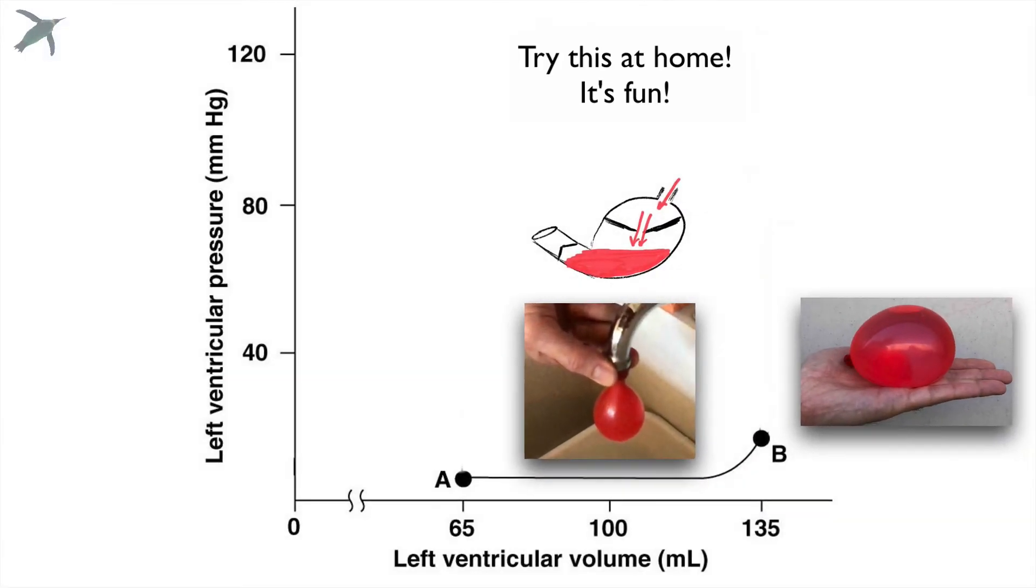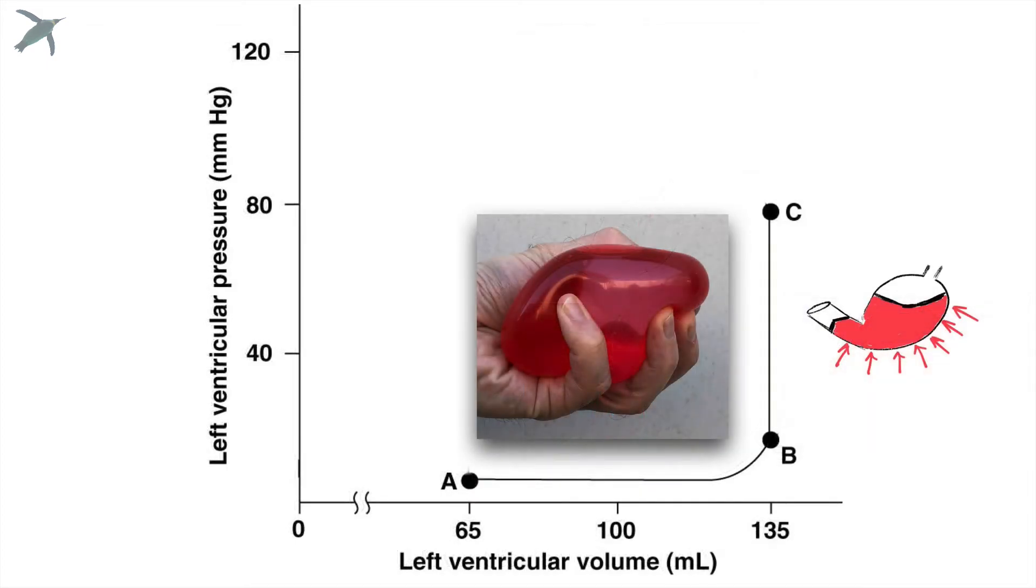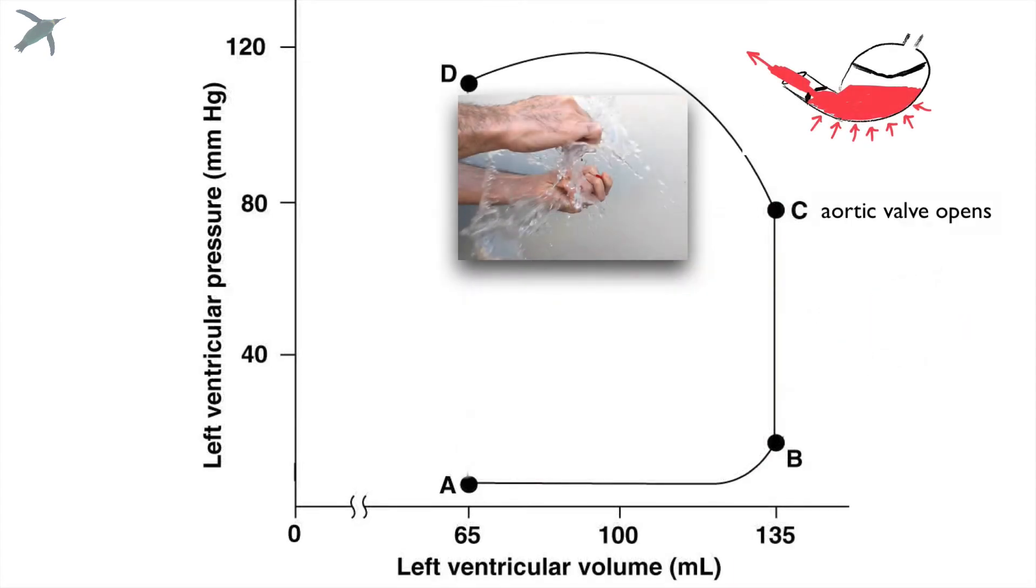So we're going to take that analogy back to the graph. From A to B, you fill your water balloon. From B to C, you squeeze the balloon, but don't pop it yet. So we're building the pressure. Notice that is isovolumic. Now, from C to D, that's when we're going to keep squeezing and pop the thing. So the water is leaving the balloon, but we keep squeezing it.